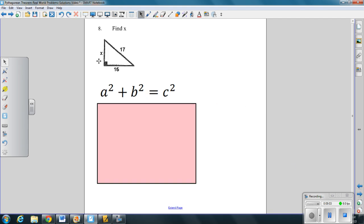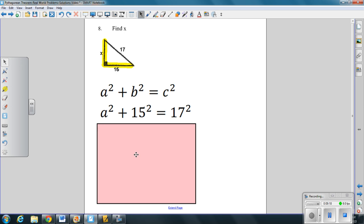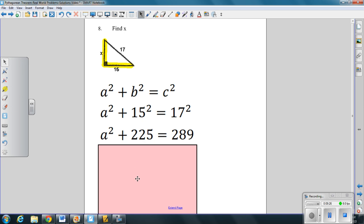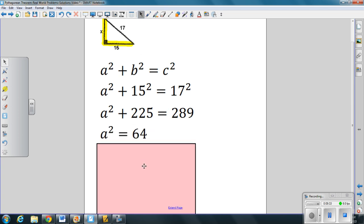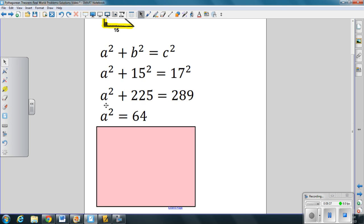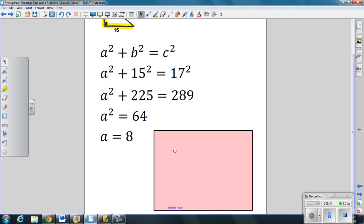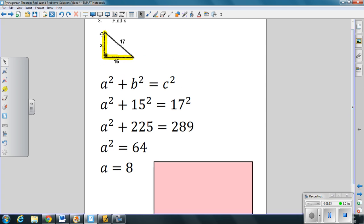Number 8. Real simple. Find x. Remember here we have two legs. We have a leg called x and the other leg called 15. So a squared plus 15 squared equals the hypotenuse of 17 squared. 15 squared is 225 and 17 squared is 289. We subtract 225 to both sides and we get a squared equals 64. And how do we undo this square? We square root both sides. The square root of a squared is a and the square root of 64 is 8. So that means the missing side of the right triangle is 8 units. Any questions please ask.